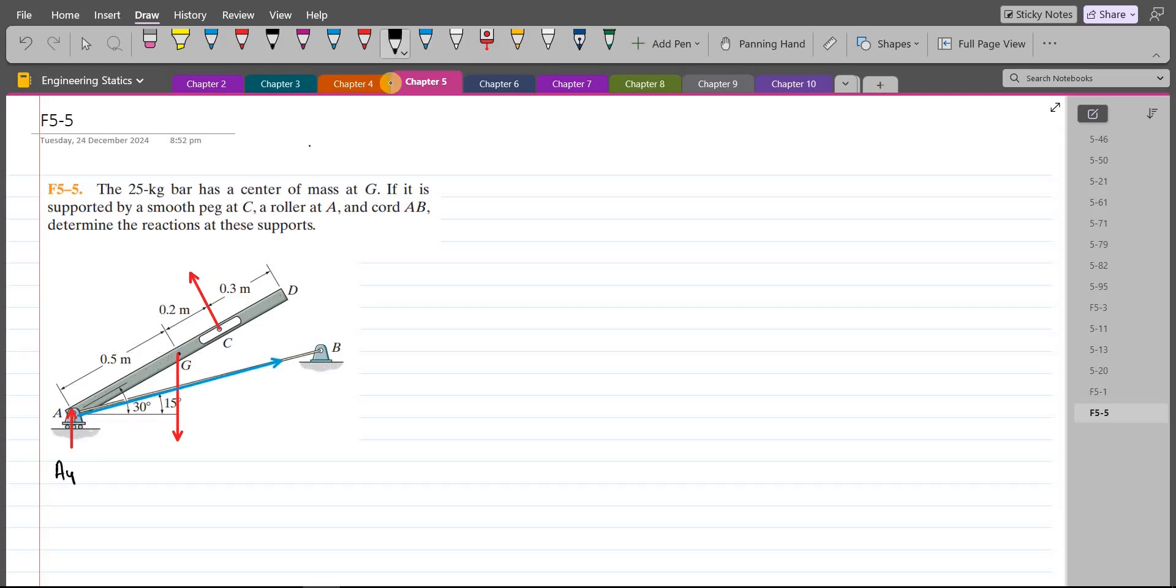This right here is AY. This is NC. And this is the weight which is 25 times 9.81, which equals 245.25 Newtons. And we have a tension due to this chord AB, so TAB.